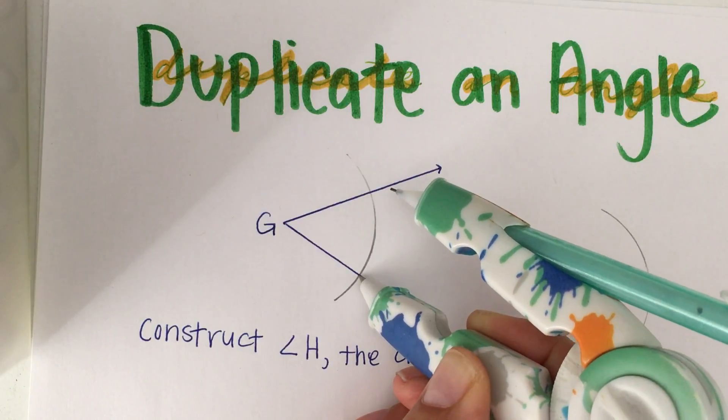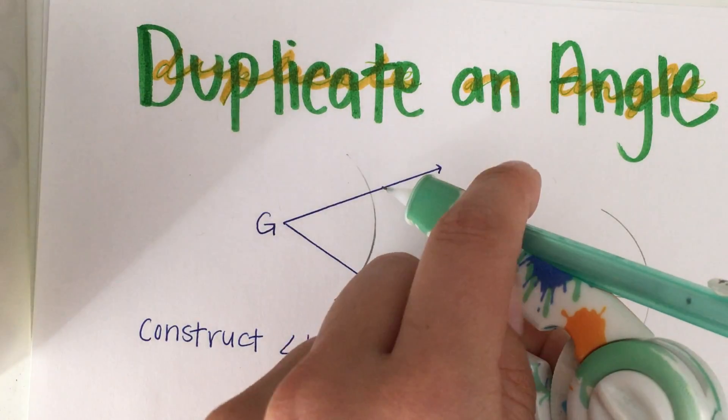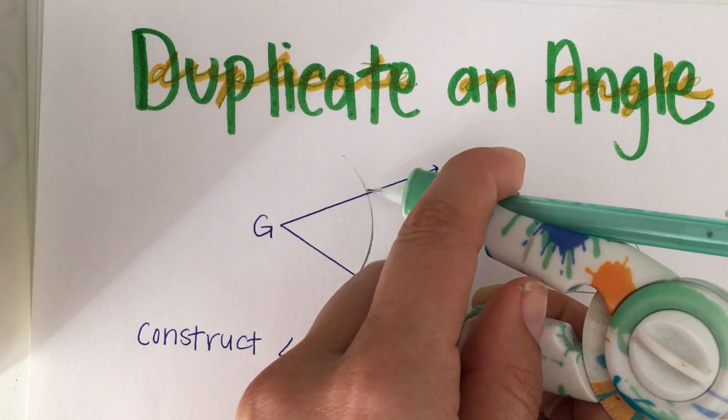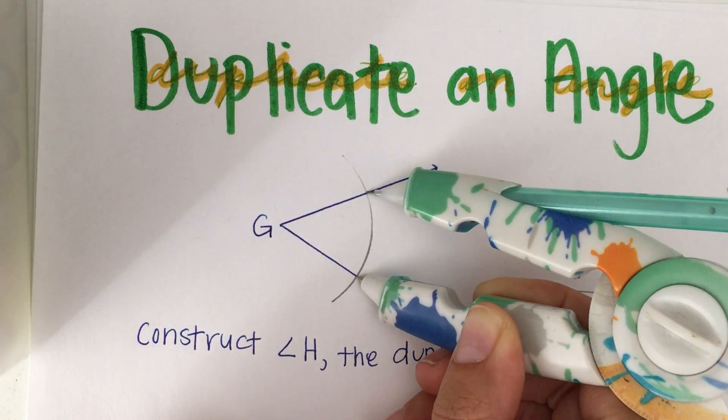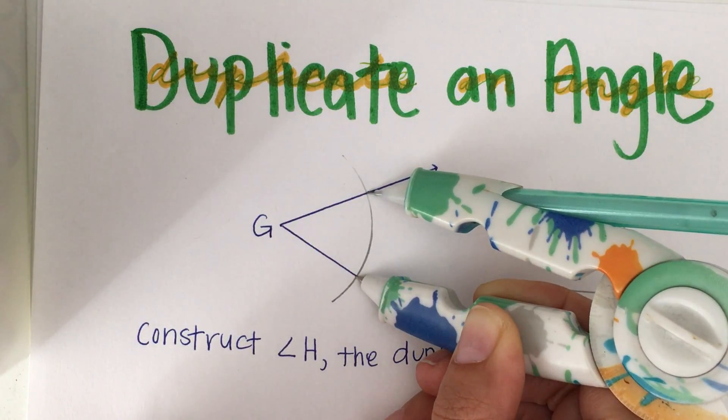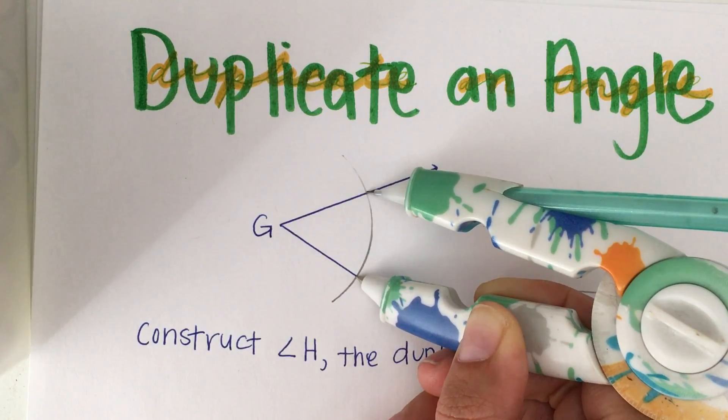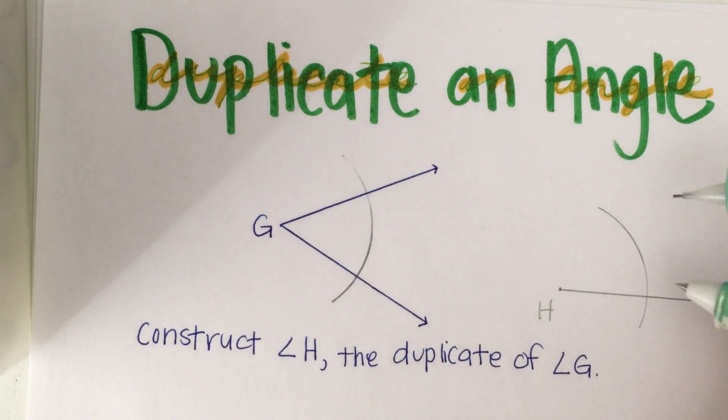I have to close it a little. Here we can see that we have the distance across the angle at the arc. I'm going to go over to angle H and measure the same distance across the arc.